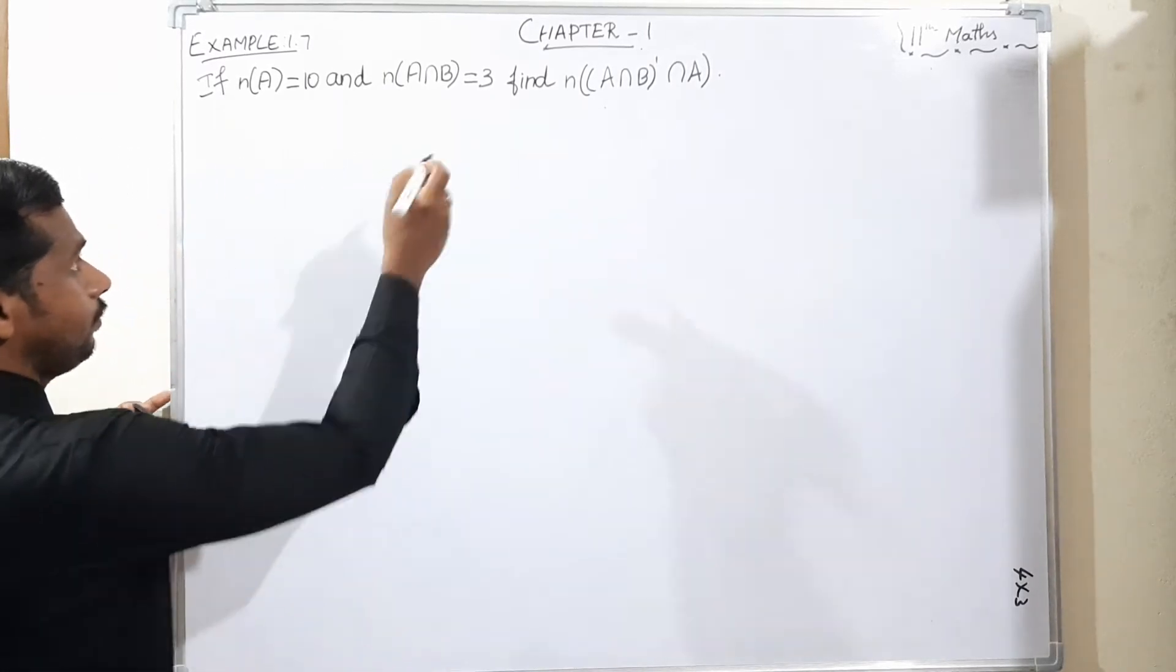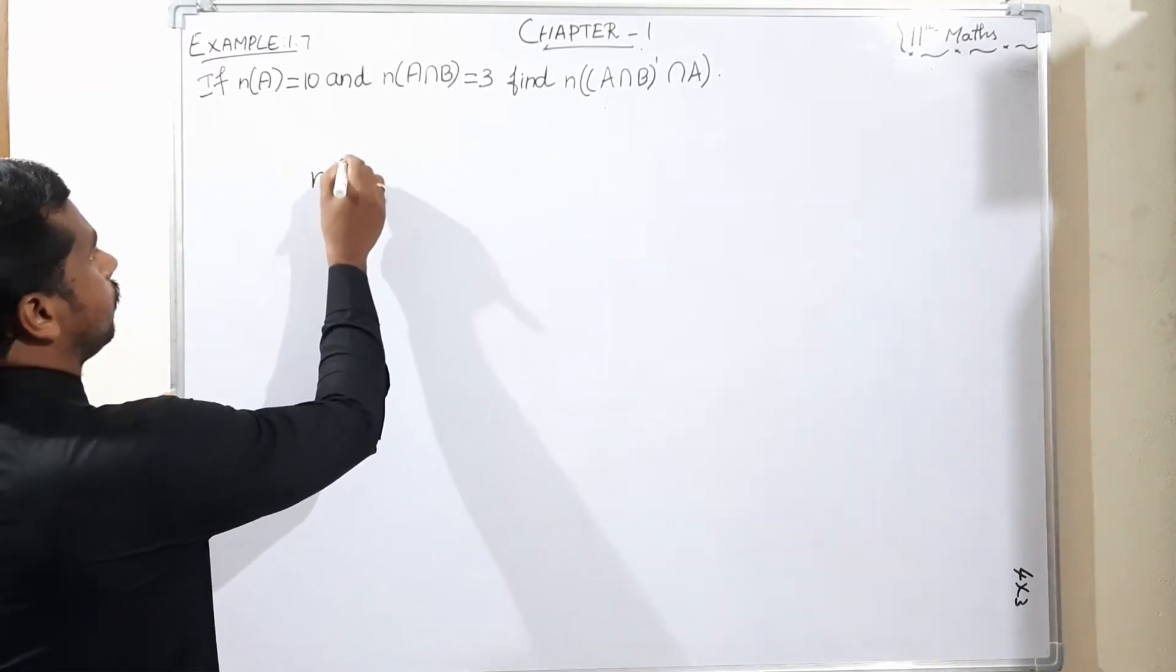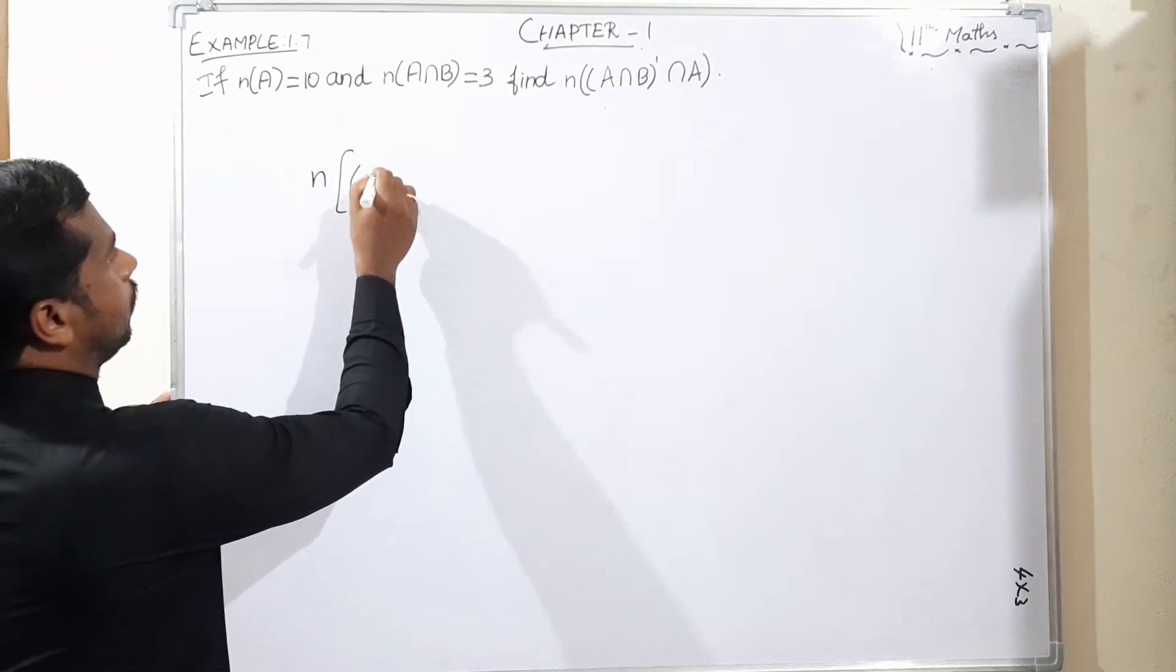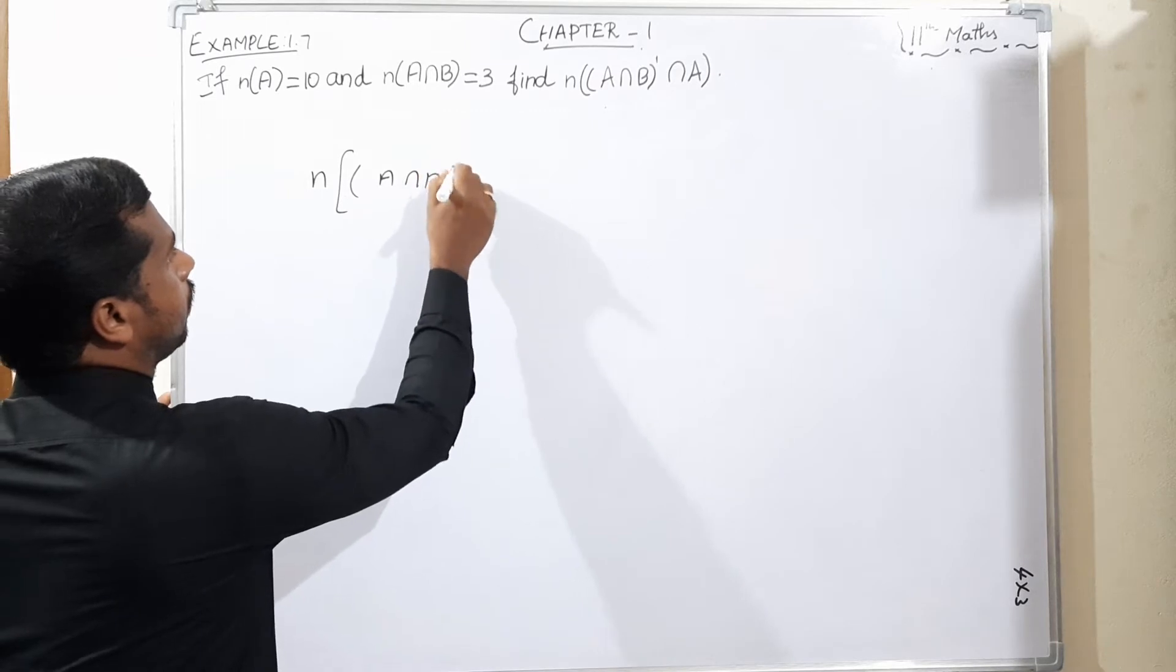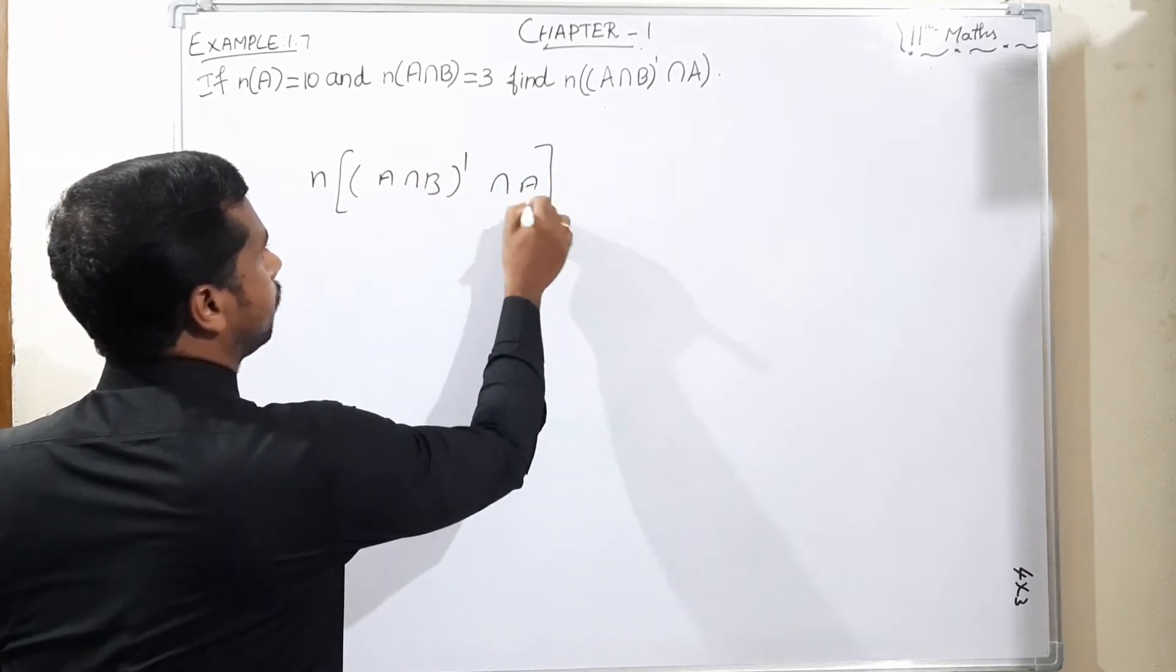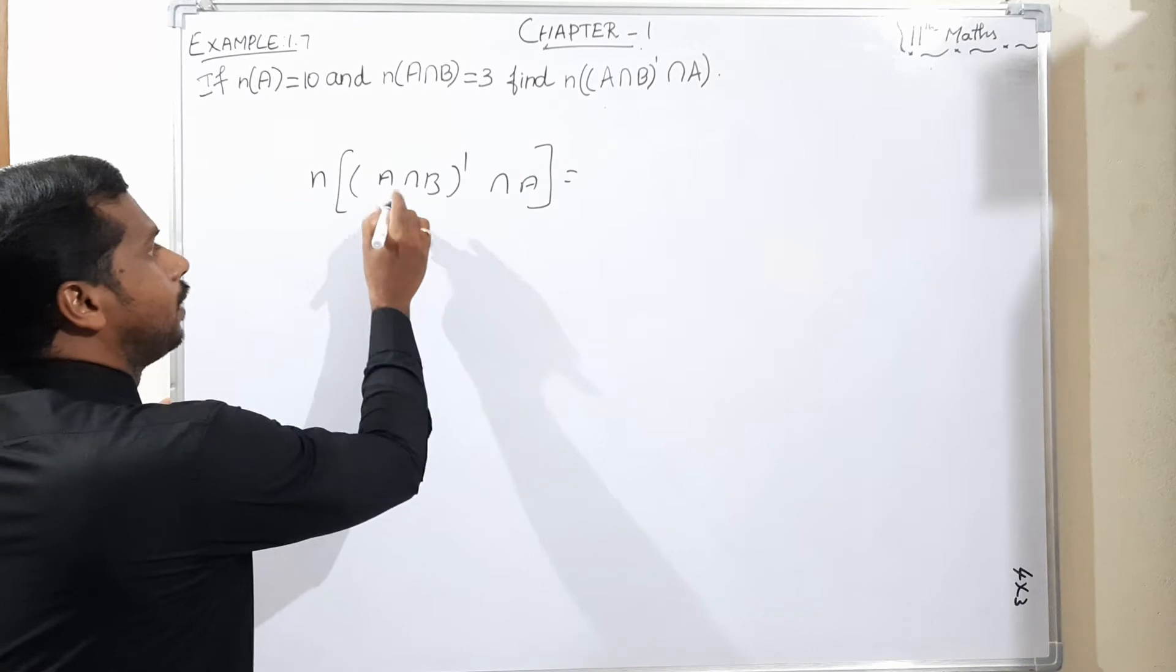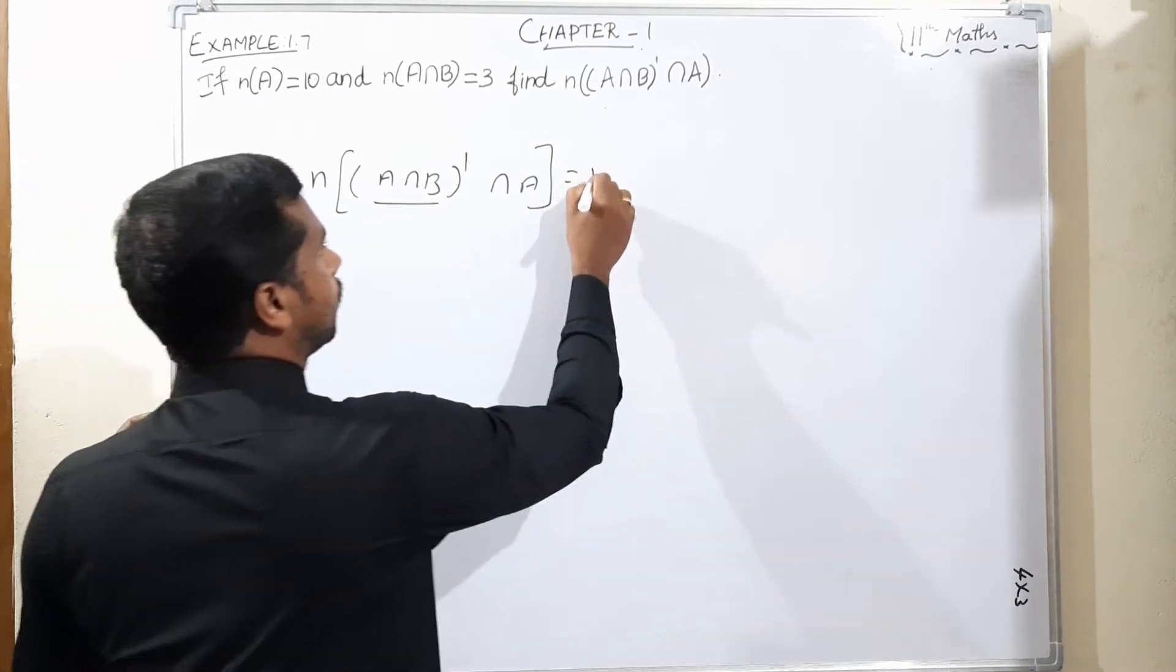Find n(A∩B'∩A). To solve this, we will use De Morgan's law.